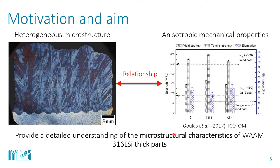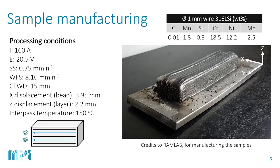We provide this understanding through microstructure characterization using different microscopy techniques. In order to perform the study, we manufactured a block sample, which is shown in the image. The sample is 140 millimeters long, around 40 millimeters wide, and 30 millimeters high. A summary of the processing conditions is shown on the left. We used a bi-directional scanning strategy, which means that each layer has the same deposition direction, parallel to Y, but successive layers have the opposite deposition direction.